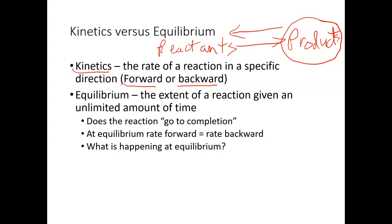When the rate or the speed of the reaction going forward and backward is equal, then we can say that a reaction has reached equilibrium. So the rate going forward and the rate going backward become equal at equilibrium.